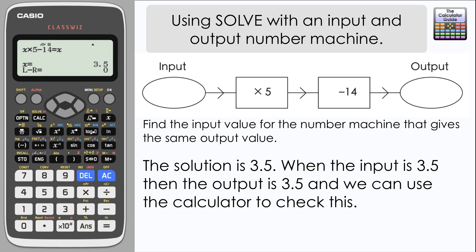We can use the calculator to check that this is correct. So if we type out 3.5 times by 5 minus 14, we're going to get an output of 7 over 2 which is 3.5.